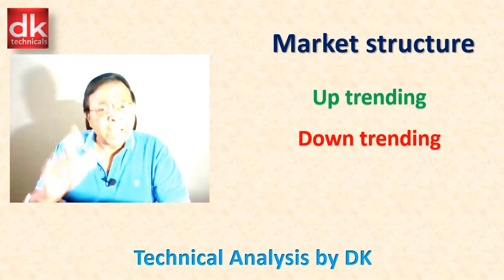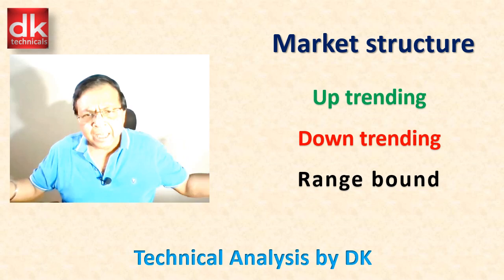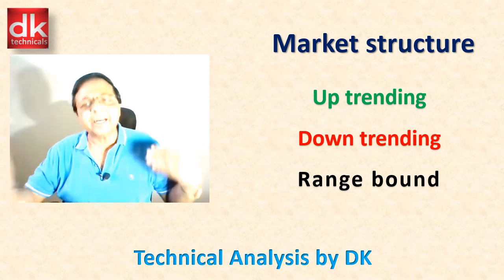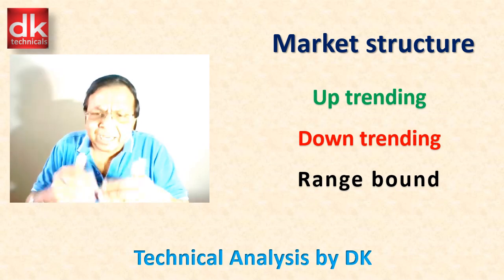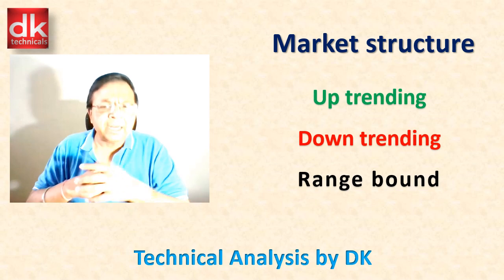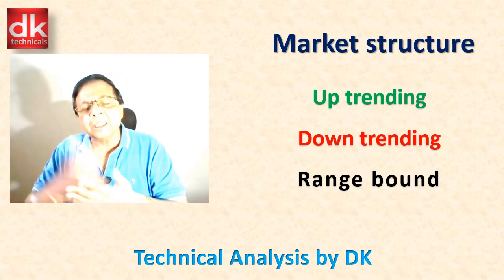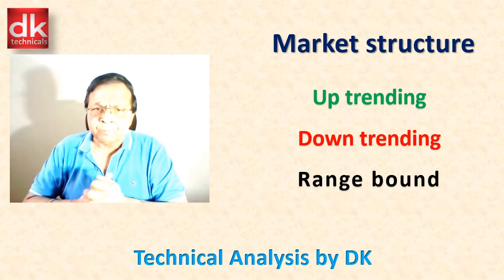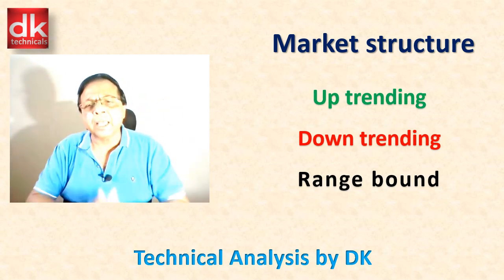Agar downtrending market hai, prevailing trend downward hai, to hamari dosti downtrend move se honi chahiye. Matlab hume hamesha short selling opportunity dhoondni padegi, kyunki jab market markdown phase mein hota hai — jo redistribution phase hota hai — har pullback ek short selling ki opportunity deta hai. Hume us right opportunity ka patiently intezaar karna hoga jab bhi market mein pullback ki samapti hogi, correction ki samapti hogi, ya retracement ki samapti hogi, tab hum trade initiate kar sakte hain jahan risk chota ho aur reward ki potential adhik ho. Aur agar market ka prevailing trend sideways ya range bound hai, to agar range kaafi bada hai, hum range trading kar sakte hain agar risk reward ratio kam se kam 1:2 milne ki sambhavna ho.